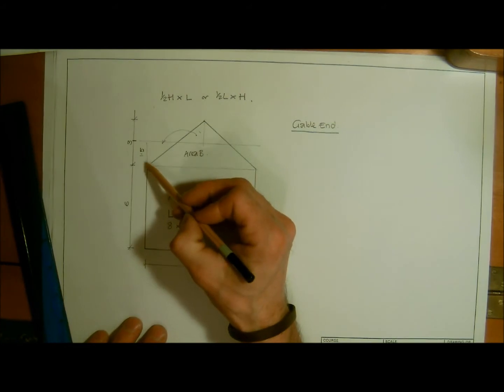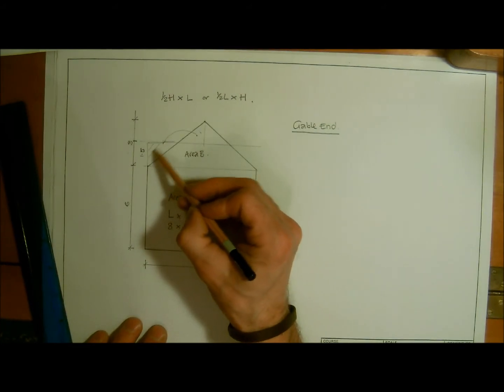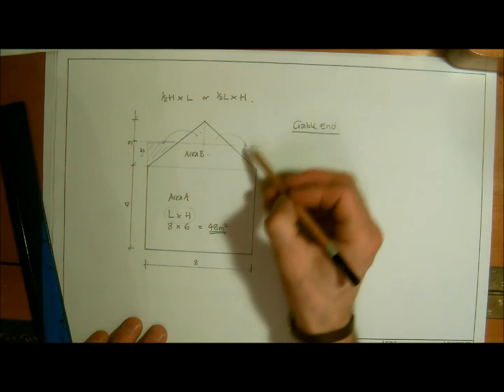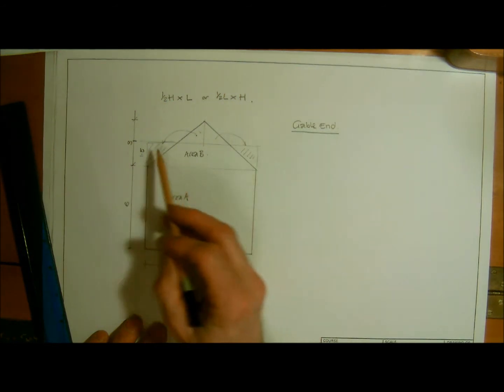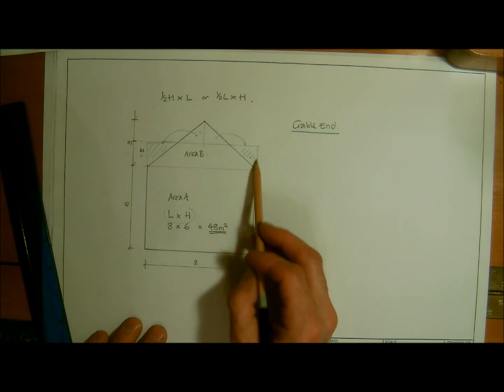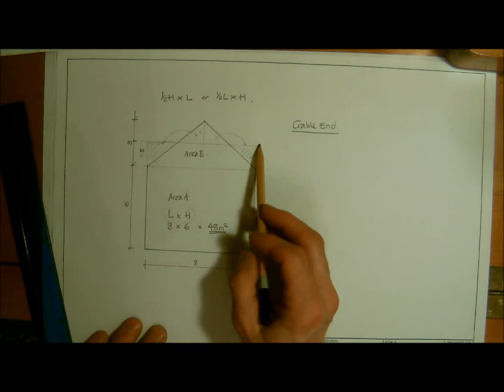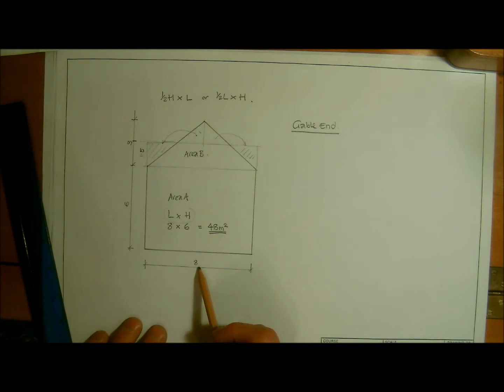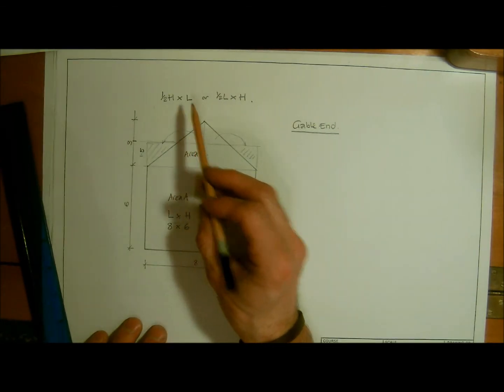This part then fills in this part, and this bit fills in that part. So by halving it, we've now made ourselves a long rectangle which is 1.5 meters high by 8 meters long.